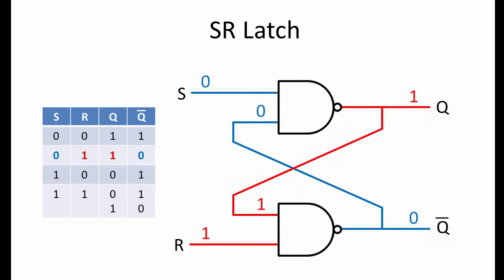When input S is made low momentarily, that is when S becomes 0 and R is still 1, the output at Q becomes 1. The latch is now storing a 1, and S can be returned to its normal high state.